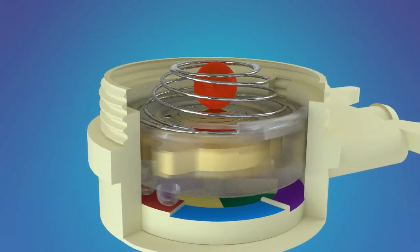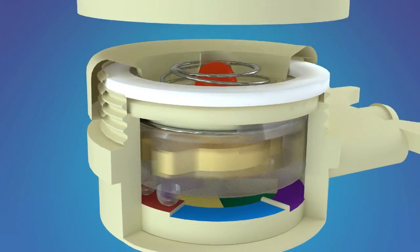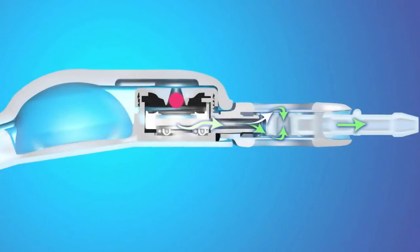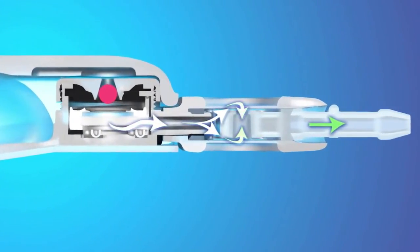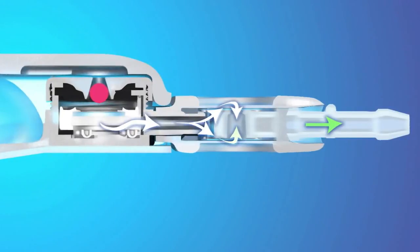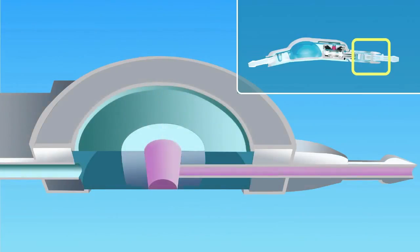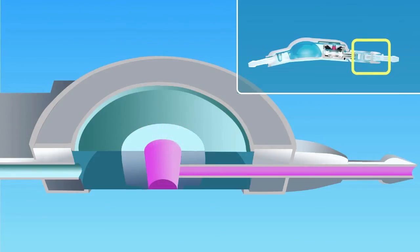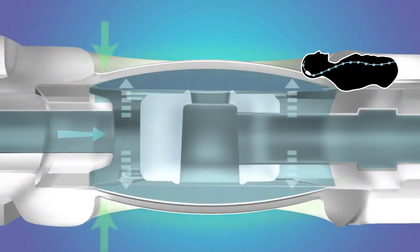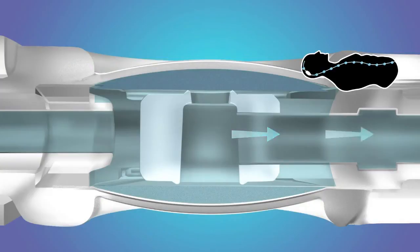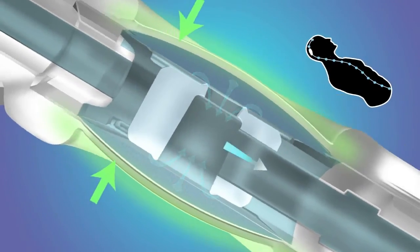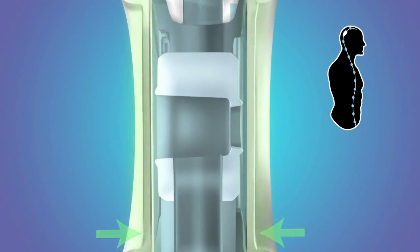The rotor retention spring helps to stabilize the magnetic rotor on the selected valve setting. Once the CSF passes through the adjustable valve mechanism, it enters the delta chamber. As discussed with the delta valve, the inlet diaphragm area is greater in size than the outlet port area, thus allowing the positive inlet pressure to control the delta chamber while minimizing the effects of the negative hydrostatic outlet pressure. When the patient is in the supine position, the membranes on either side of the delta chamber are relaxed or open, allowing for CSF flow. When the patient stands up, the negative pressure pulls the membranes closed, reducing the flow of CSF.